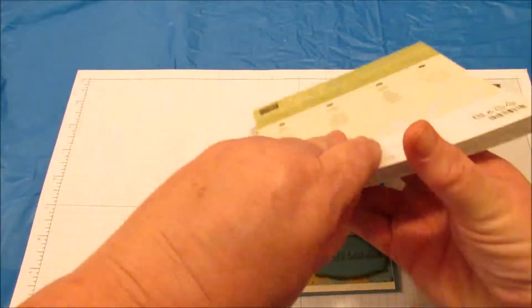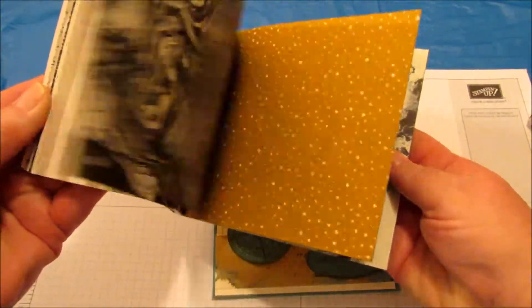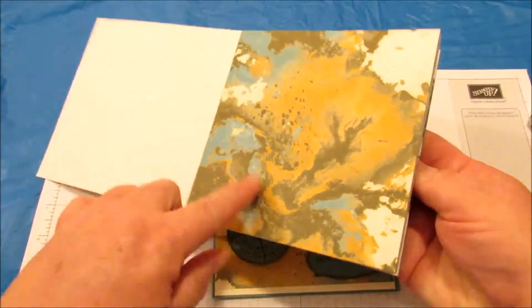We're going to be using the Going Places DSP paper. There's a little different paper in here. The one I'm using is this one.